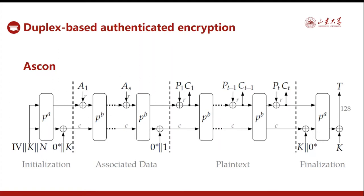This is the structure. It is one path — the AD is injected here, and the message blocks are absorbed by the duplex outputs, and they in turn affect the computation. So the final state depends on all of them, on the AD and on the messages, and can be used as a message authentication code.